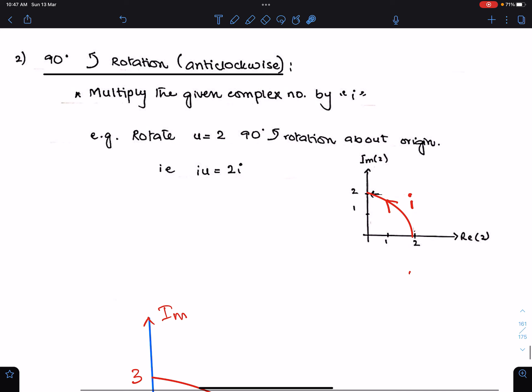Number 2: 90 degree anticlockwise rotation. For 90 degree anticlockwise rotation, multiply the given complex number by positive i.